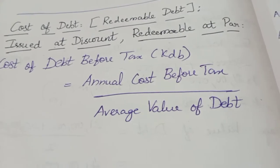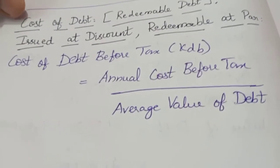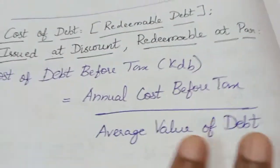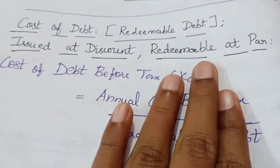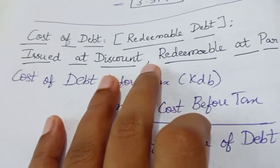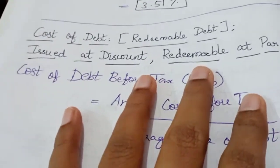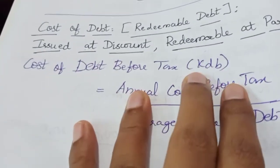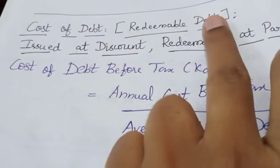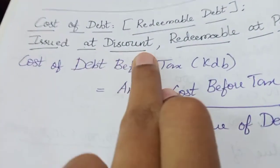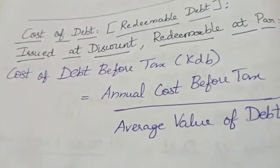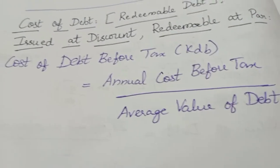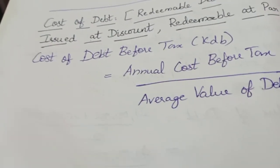Hi everyone, today we are going to discuss about cost of redeemable debt when issued at discount and redeemable at par. In our previous videos we discussed cost of redeemable debt when issued at par, redeemable at par, and when issued at premium redeemable at par. Under all those situations we discussed how to calculate cost of debt before tax and after tax.